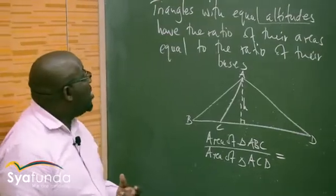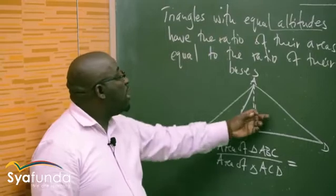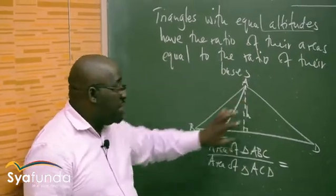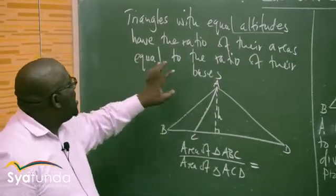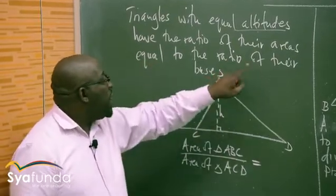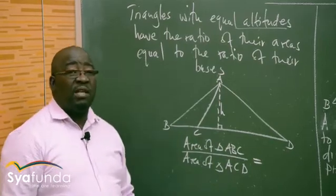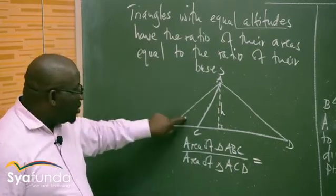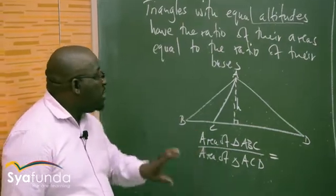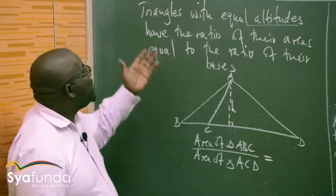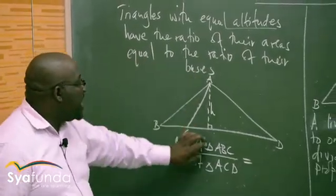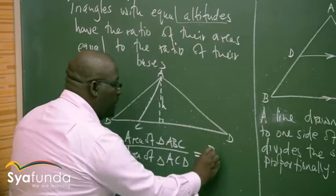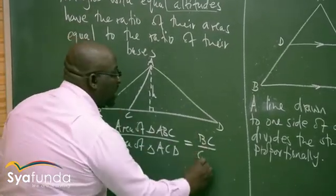Let's read the theorem again for more insight: triangles with equal altitudes have the ratio of their areas equal to the ratio of their bases. These two triangles have the same altitude. So area of ABC over area of ACD equals BC over CD. The theorem is saying: area of triangle ABC over area of triangle ACD equals the ratio of their bases, which is BC over CD. This is what this theorem is saying.